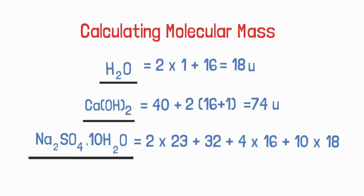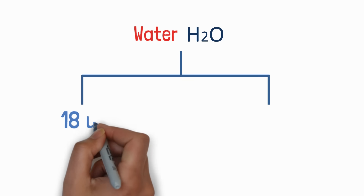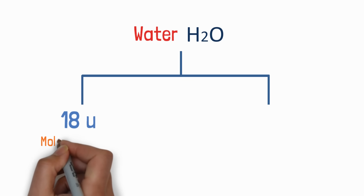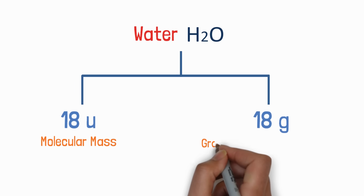You need to understand the structure of the molecule. When we say Na₂SO₄·10H₂O, it means we have 10 H₂O molecules, not 10 H₂ and 1 oxygen molecule. For water, mass can be written as 18 U or 18 gram: when it is 18 U, it is molecular mass, and when it is 18 gram, it is gram molecular mass.